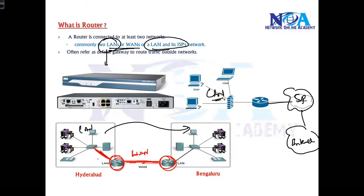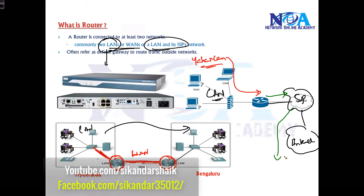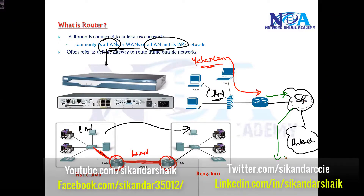LAN to ISP means you are connecting to a service provider, and from there you want to access the internet. For example, if a user sitting in the LAN wants to request a Yahoo page, the request goes to the router and the router will forward the packet to the service provider, from there it reaches the internet. So whether you want to connect to the ISP or another network, you are connecting your network to a different network with the help of a router — it can be within the company or outside, like connecting to service partners.